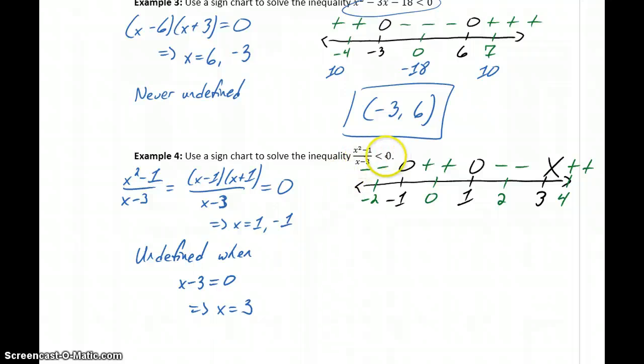So we're interested in where our function value is less than 0. So that'll be from negative infinity to negative 1, union, we'll skip the interval from negative 1 to 1 since it's positive, and include the interval from 1 to 3.